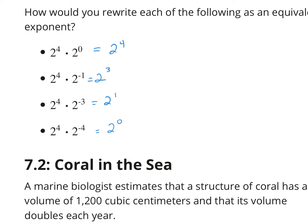A few reminders about negative exponents: 2 to the 0 power — remember, anything raised to the 0 power is 1. When we have negative exponents, it doesn't mean our answers are going to be negative numbers. What it tells us is that we are going to end up with numbers less than 1. So 2 to the 4th is 16, 2 to the 3rd is 8, 2 to the 1st is 2, 2 to the 0 is 1. If we continue down that pattern, we end up in the fractional area.